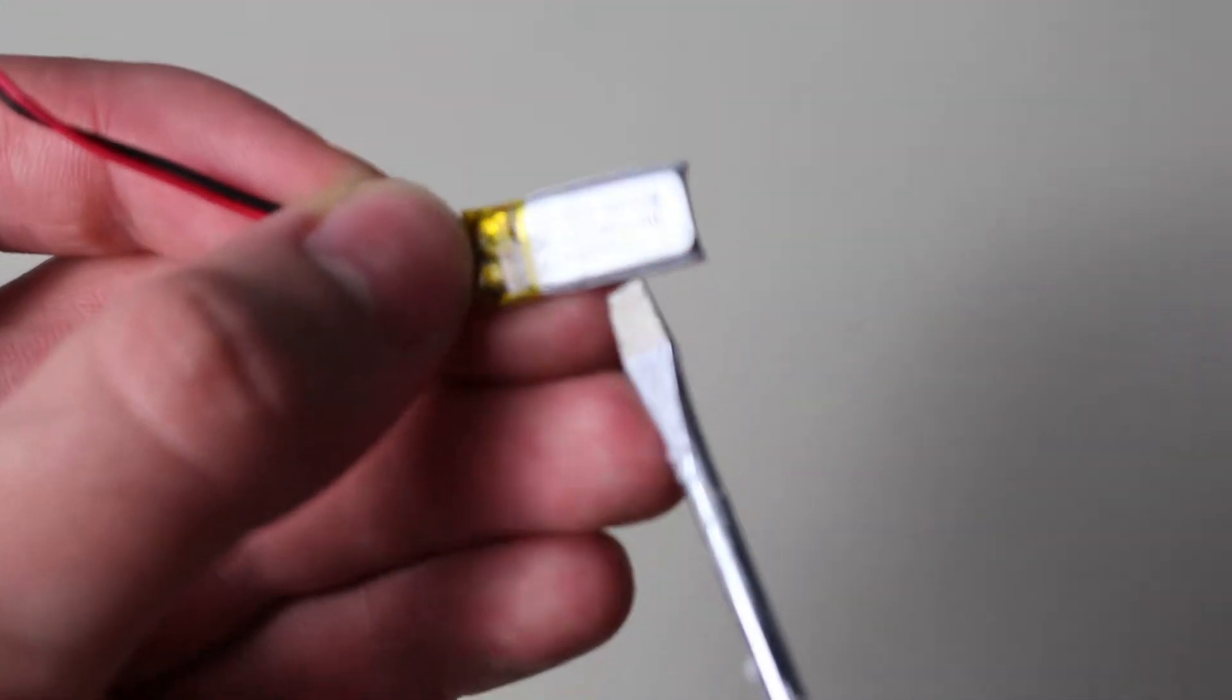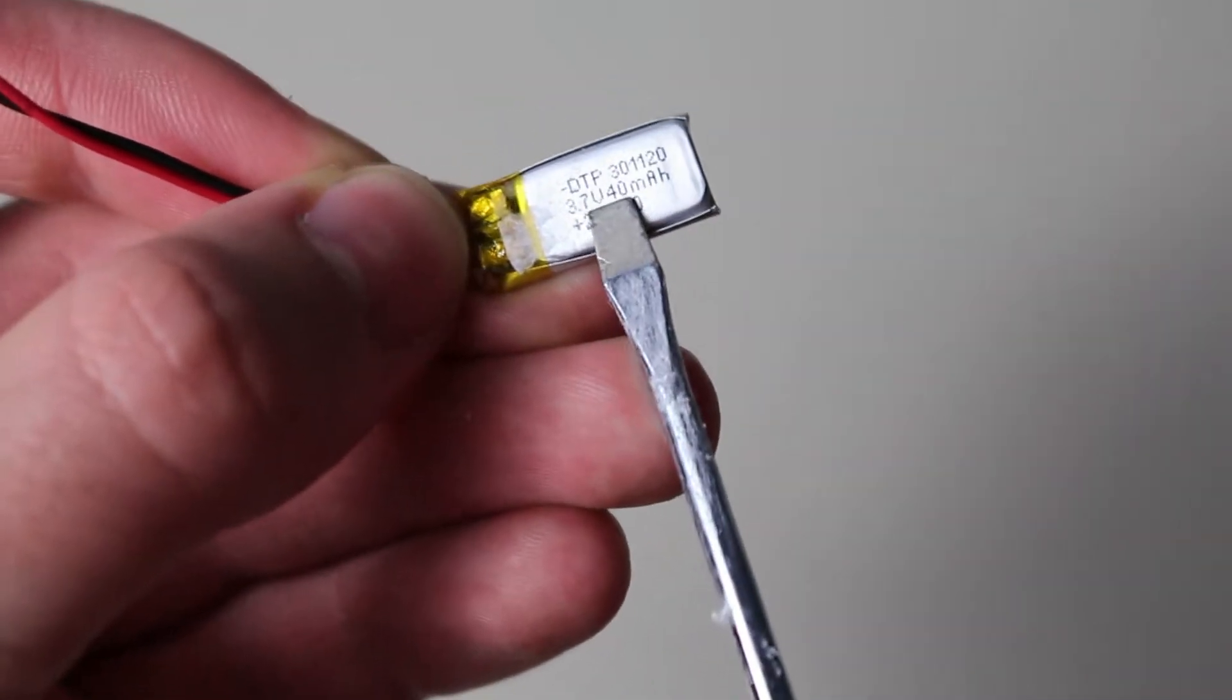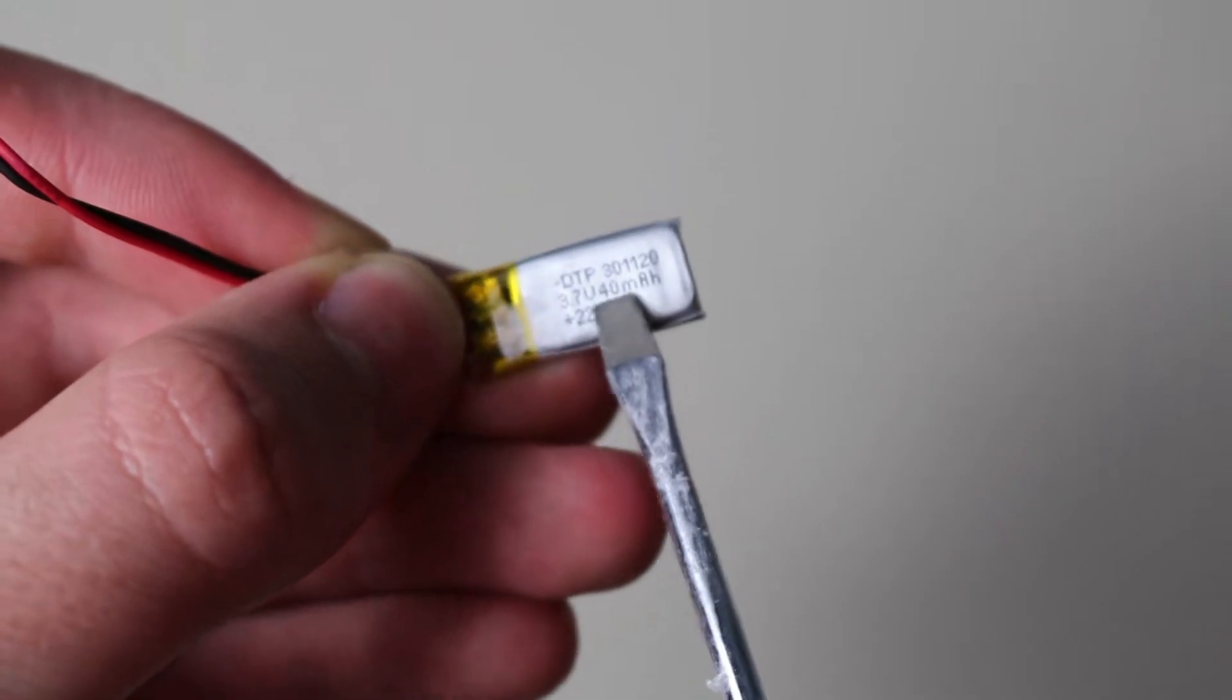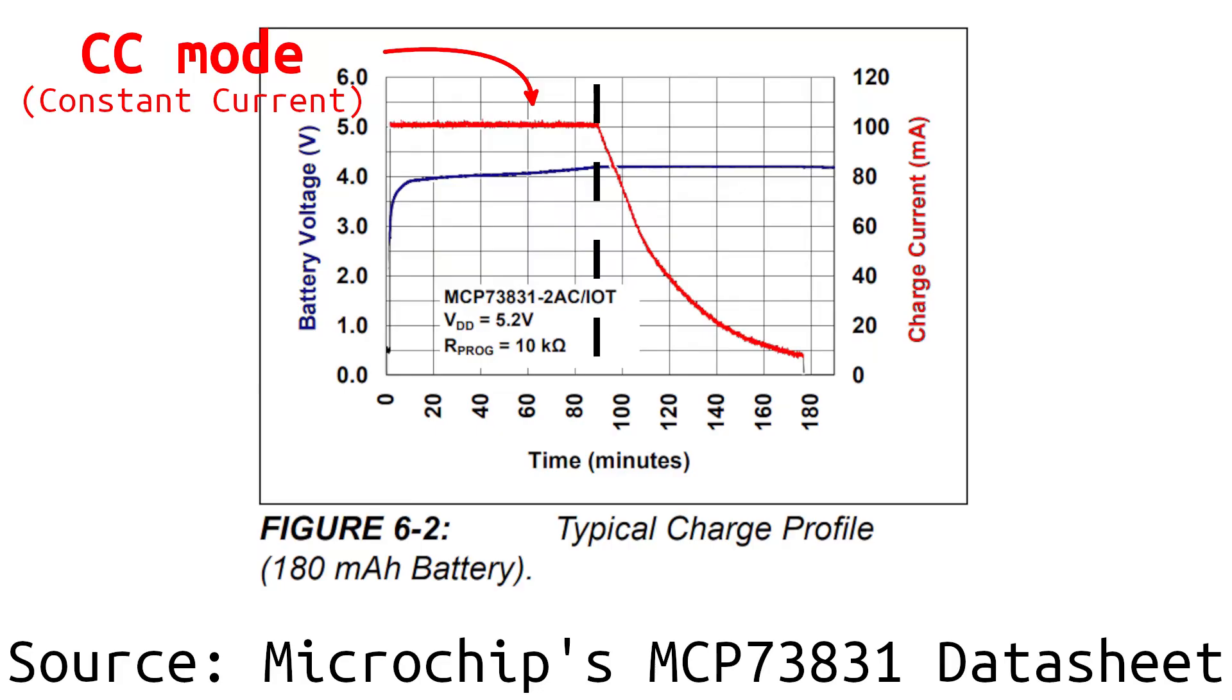So for example, this 40 milliamp hour battery, for 1C it would be 40 milliamps. Once the battery has reached about its maximum voltage, which is 4.2 volts, the charger then switches into the second mode, which is constant voltage mode. From here, the current slowly decreases until the battery can be considered fully charged.